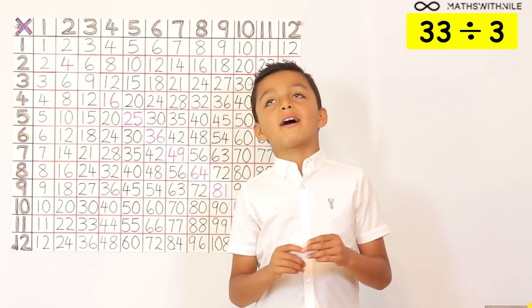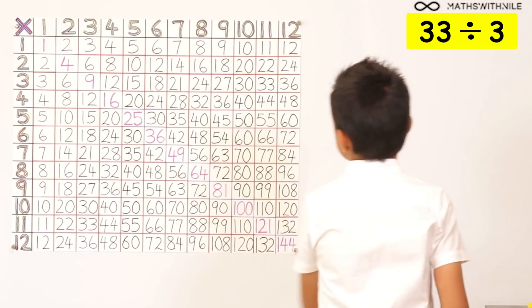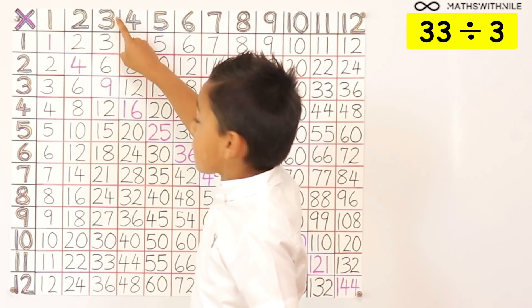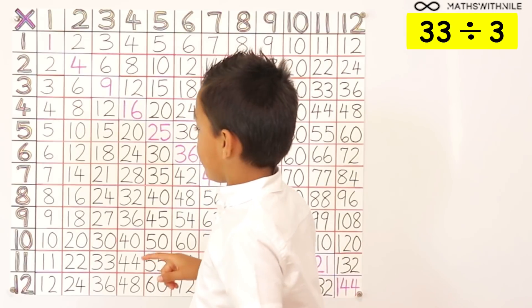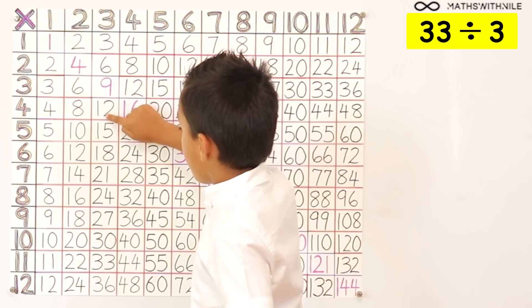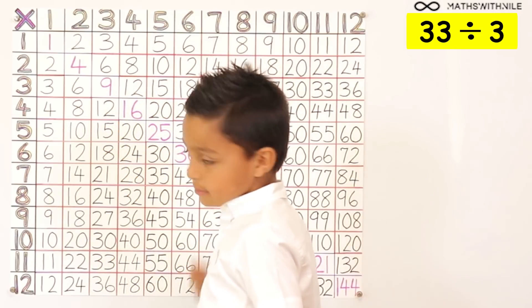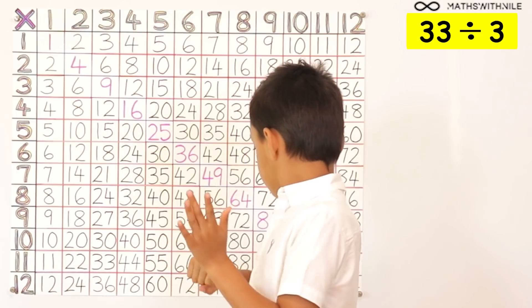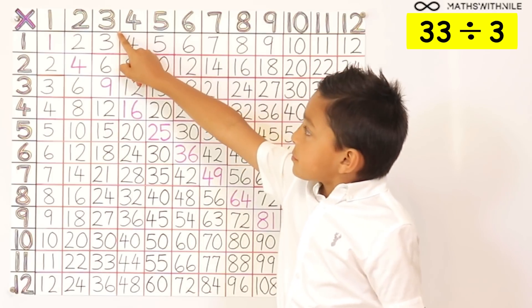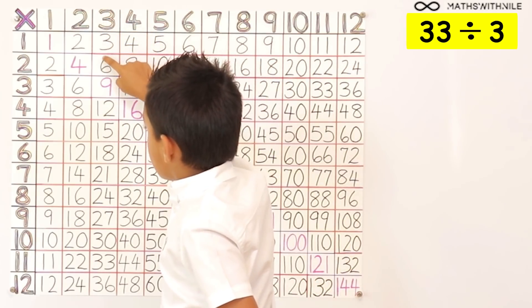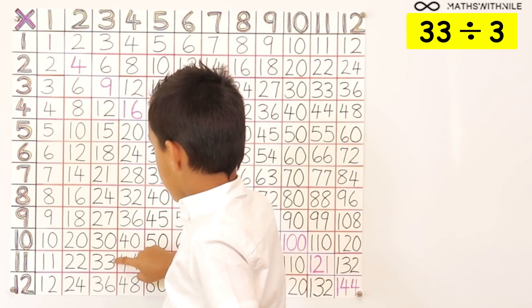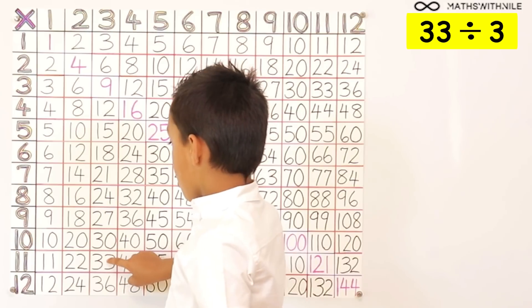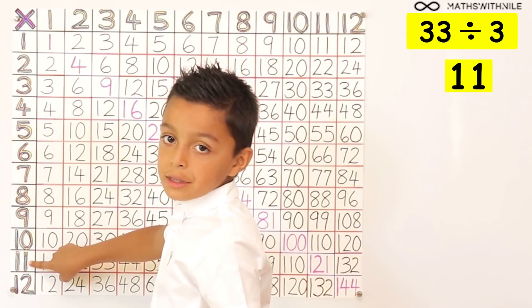33 divided by 3. So go to the grid — how are you going to do that? I'm going to find 33 in my 3 column, and then I'm going to go to the side and that will be our answer. So you're going to find the times tables you're dividing by. The question is 33 divided by 3, so show us the 3 times table. I'm going to go down until I find 33. I have found 33, and then you go across and the answer is 11.